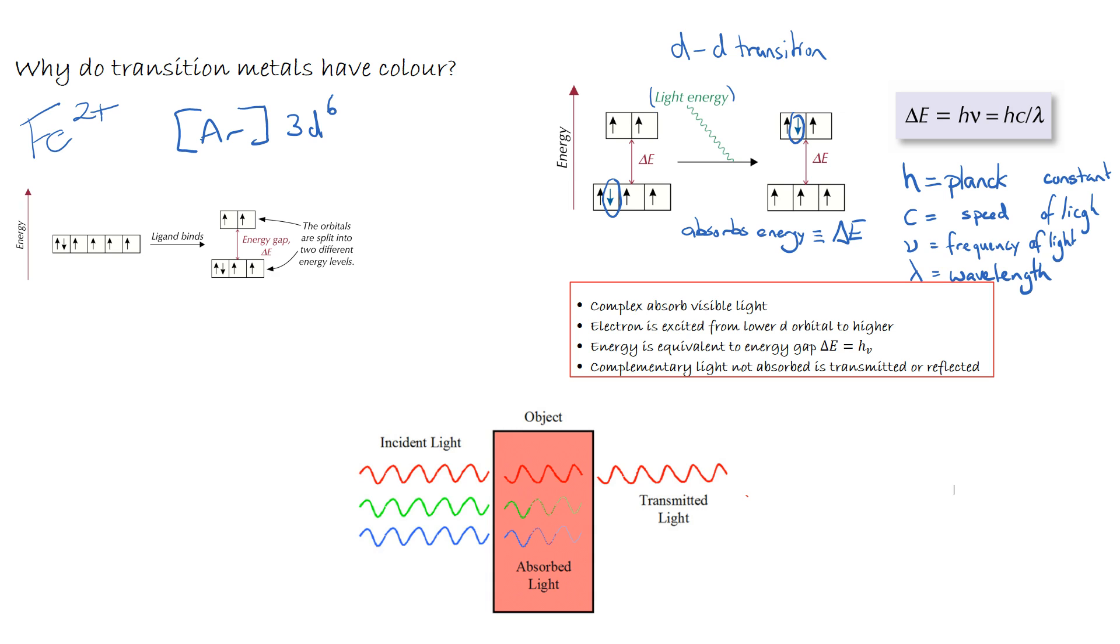So just to show you how that looks, incident light, well that simply means the light that's coming in. We might expect that to be white light. We'd have an object, and our object in this instance might be our complex. The light passes through the complex solution. Here we'd see that blue and green light is being absorbed by the complex. So in other words, that would be equivalent to the delta E, the energy gap. And the light not absorbed would be red, which is transmitted, passed through the substance and not absorbed, and is seen by the viewer on the other side. Or equally it could be reflected.